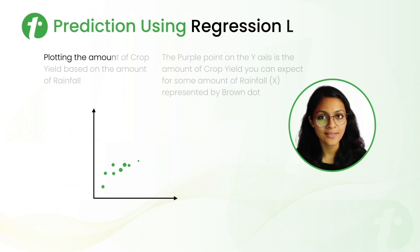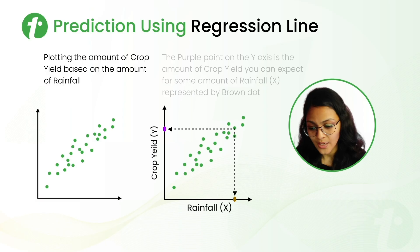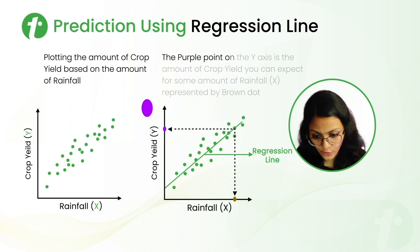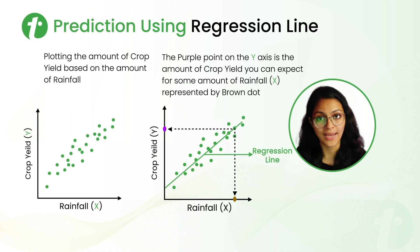So now, let's understand the concept of prediction using regression line. With this example, here we have plot between crop yield Y and rainfall X and a regression line is passing through the given data points. So, we can say that this purple point on the Y axis is the amount of crop yield you can expect for some amount of rainfall that is represented by this brown point. So, that's how we predict the outcomes using the regression line.